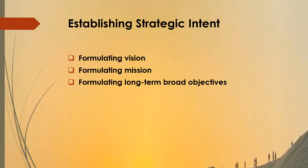The first step in the strategic management process is establishing strategic intent. All organizations must have some specific intent — what they will achieve in the future and why they should achieve it. In strategic management, this specific intention is called strategic intent, and it consists of three major elements: vision, mission, and objectives, arranged in a hierarchy in that order.